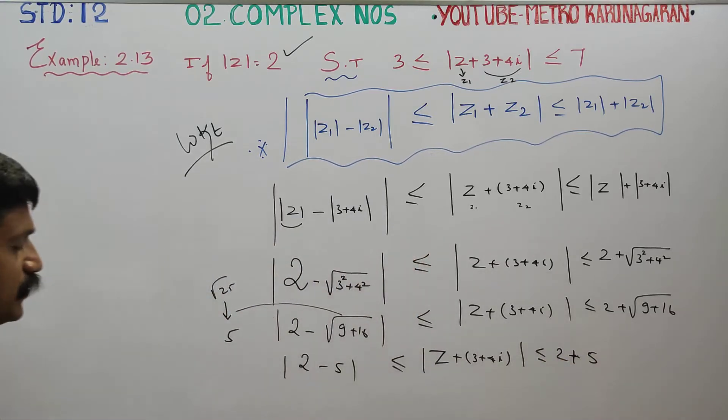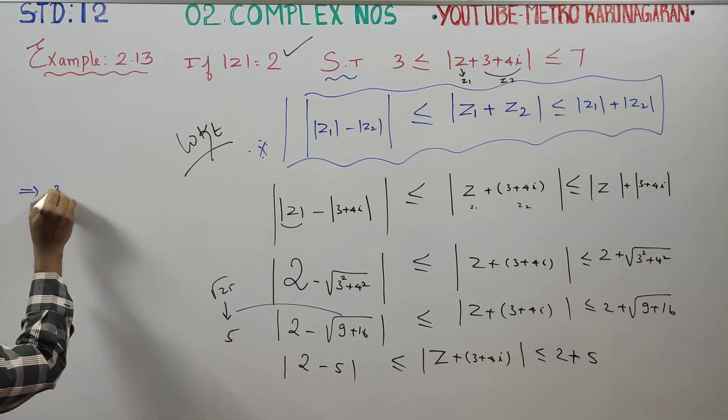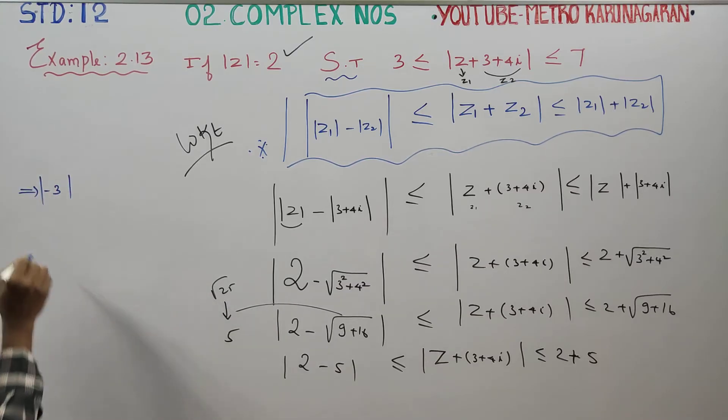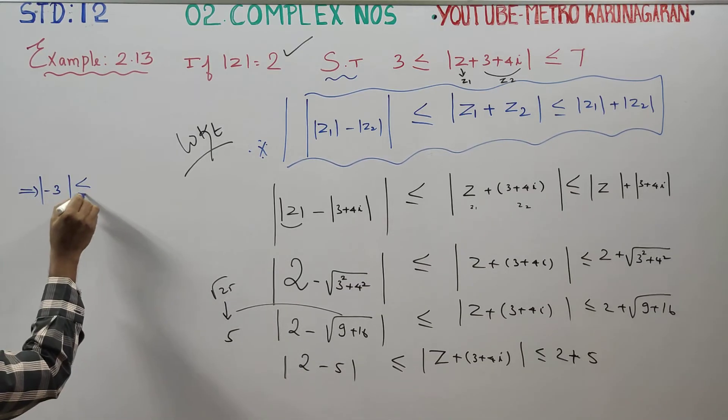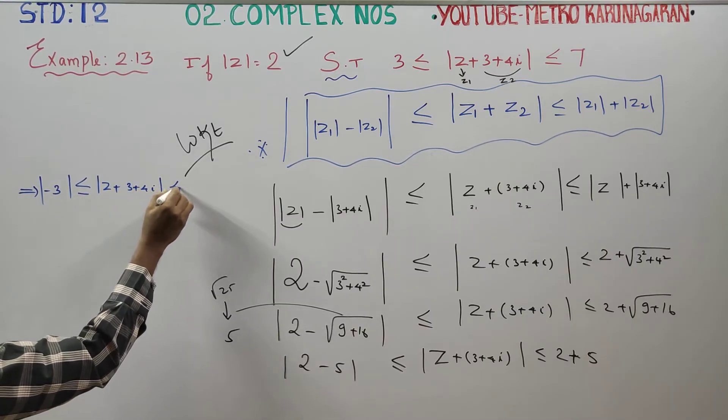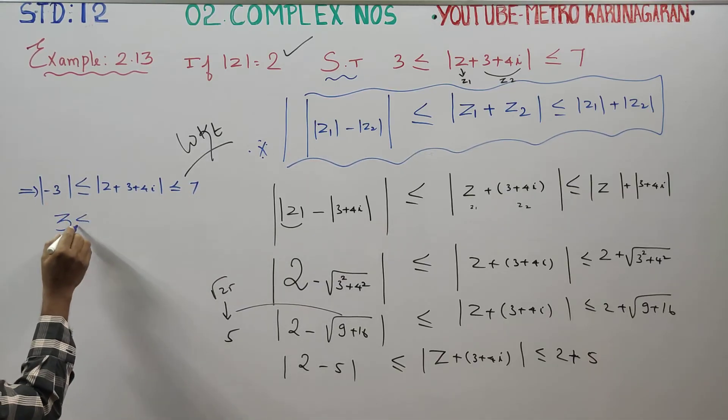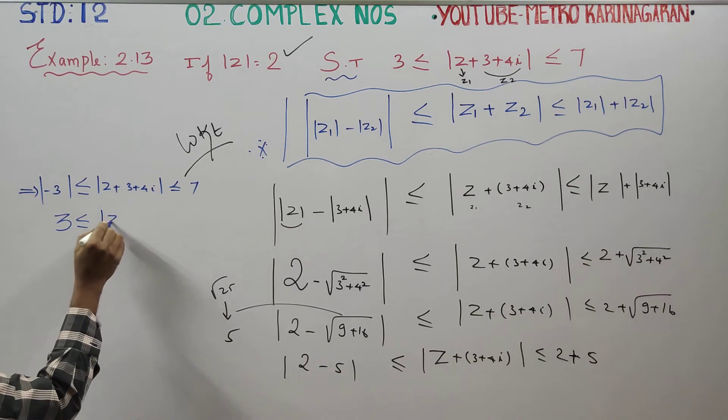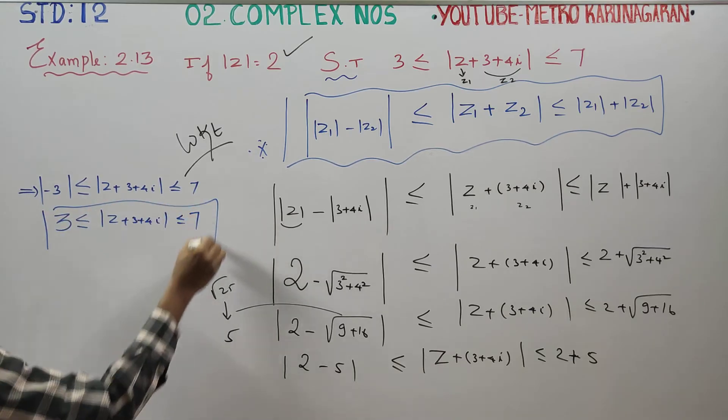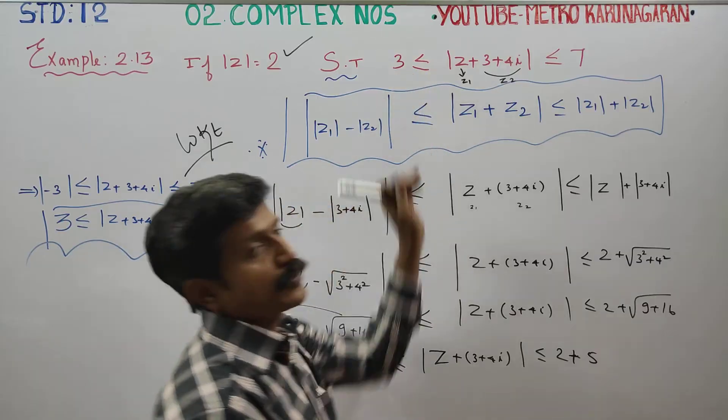Therefore, your final stage will be 2 minus 5 is negative 3. With the modulus, negative value becomes positive, so it's 3, less than or equal to z plus 3 plus 4i, less than or equal to 7. Modulus of minus 3 becomes plus 3. So we get this double-sided inequality: 3 is less than or equal to modulus of z plus 3 plus 4i, less than or equal to 7.